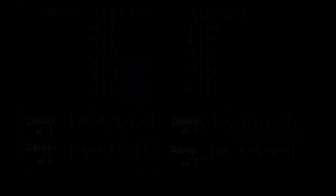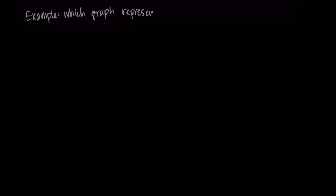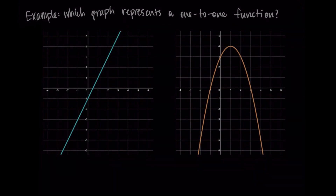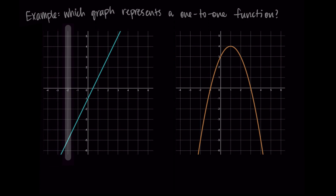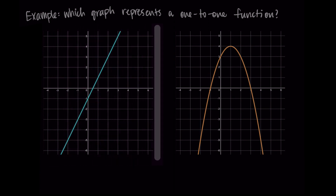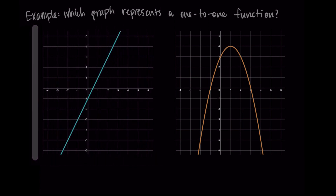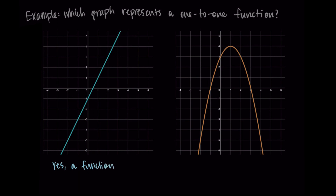Now let's move to an example with graphs. I'll show two graphs and ask which represents a one-to-one function — a line and a parabola. Starting with the line: it passes the vertical line test, so it's a function. Now checking one-to-one using the horizontal line test, we make sure every output value has only one corresponding input.